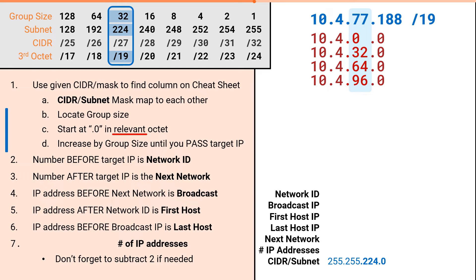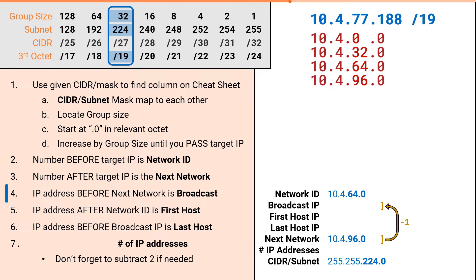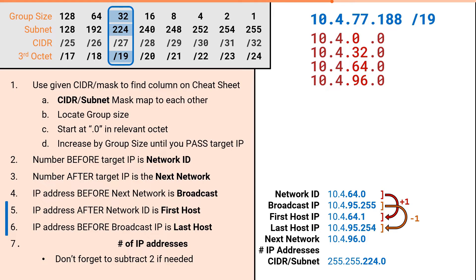And with that we've completed the hard part. From this point, the process is identical to what we've done before. The IP addresses before and after our target IP are our network ID and next network. The IP address before our next network is the broadcast IP. Since our next network was 10.4.96.0, our broadcast IP would be 10.4.95.255. The IP address after our network ID is the first host, and the IP address before our broadcast IP is the last host.